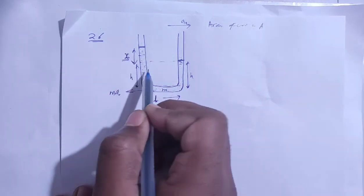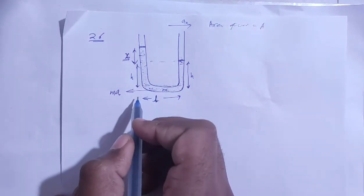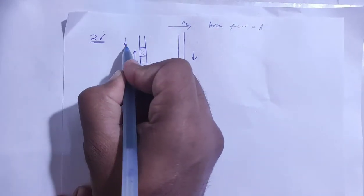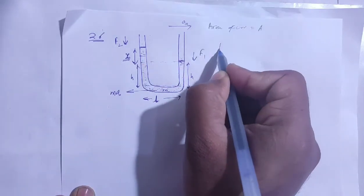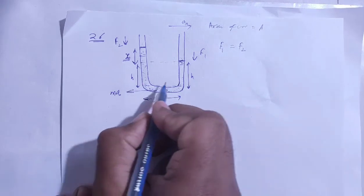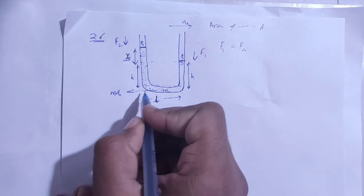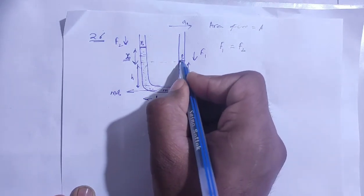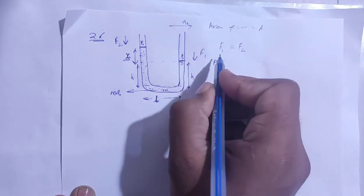This one is equal to F2. Here pressure P0, here also P0. So F1 is the atmospheric pressure times area. The second force is the height column force, the pressure H rho g into area. This last part is M into A0.